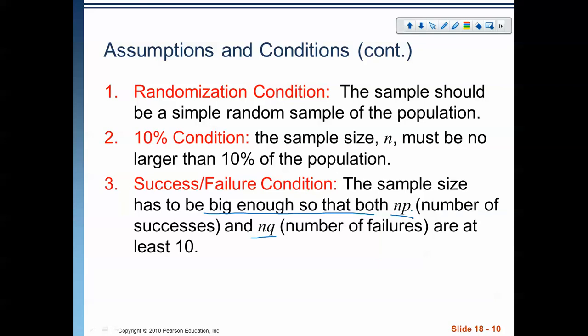So, sample size times my proportion of success and sample size times my proportion of failure. Remember, q is 1 minus p. And those numbers need to be bigger than 10. And again, we have to actually check that and show those numbers.